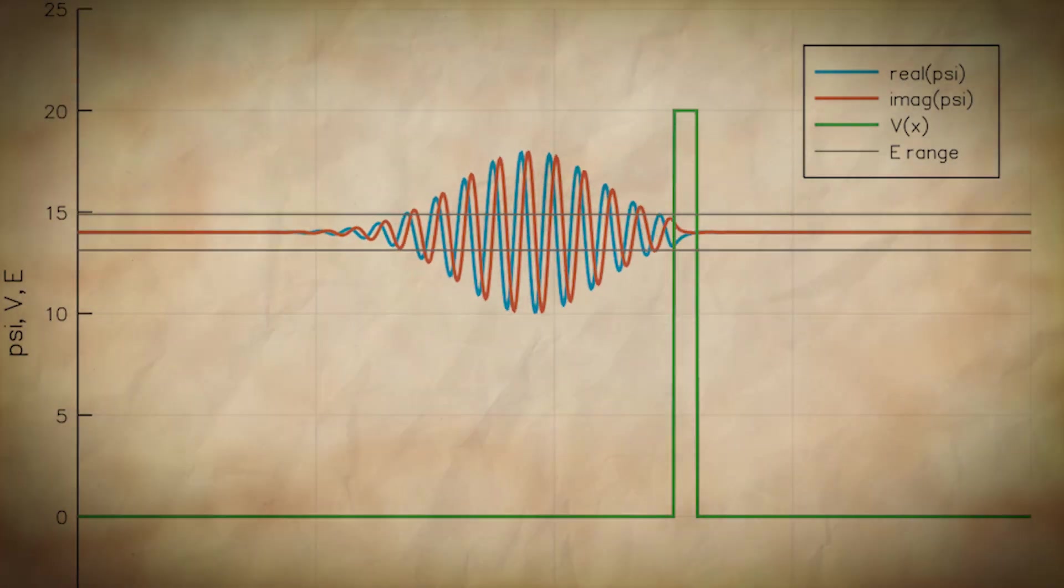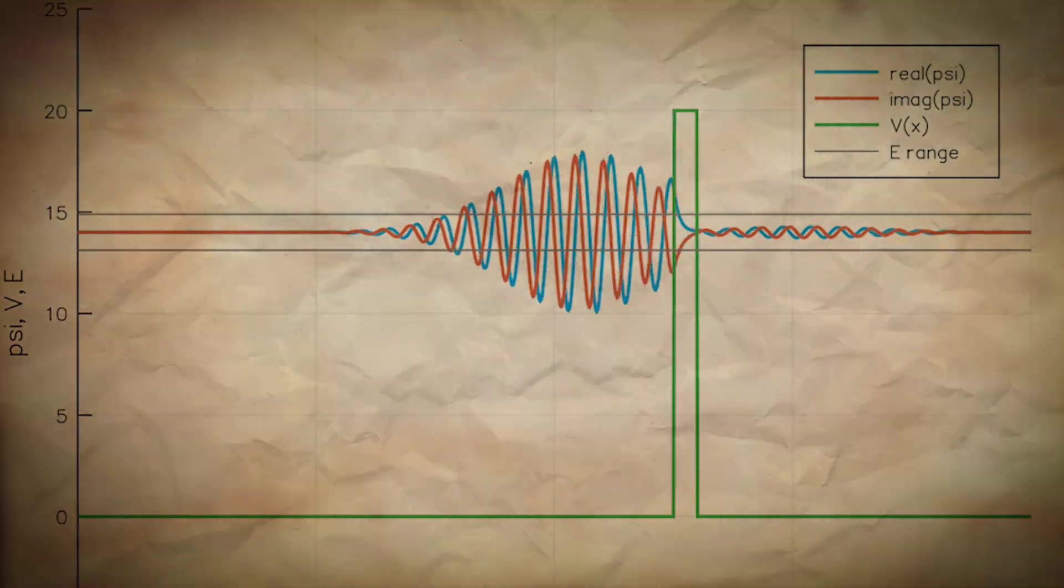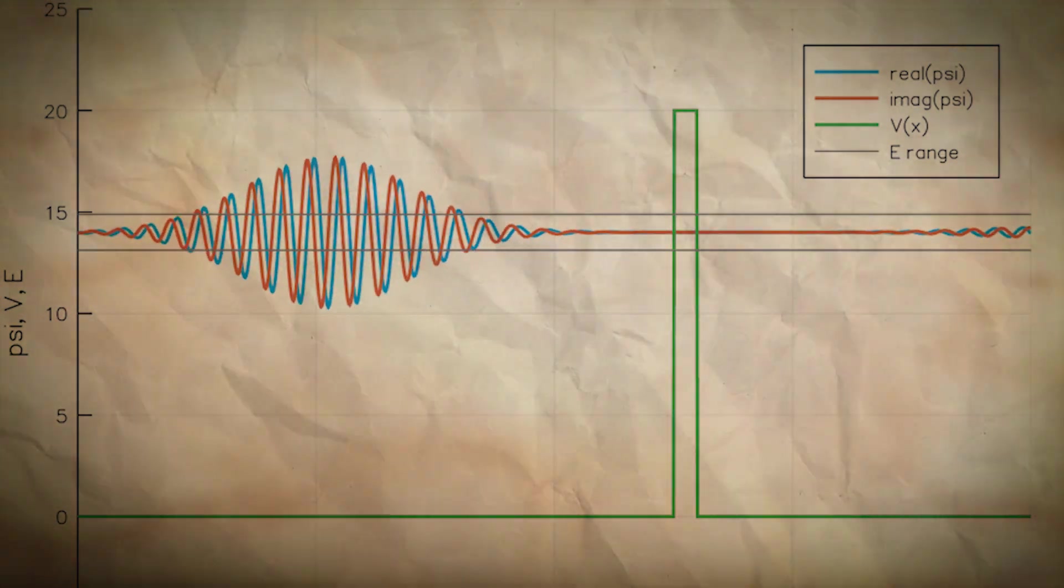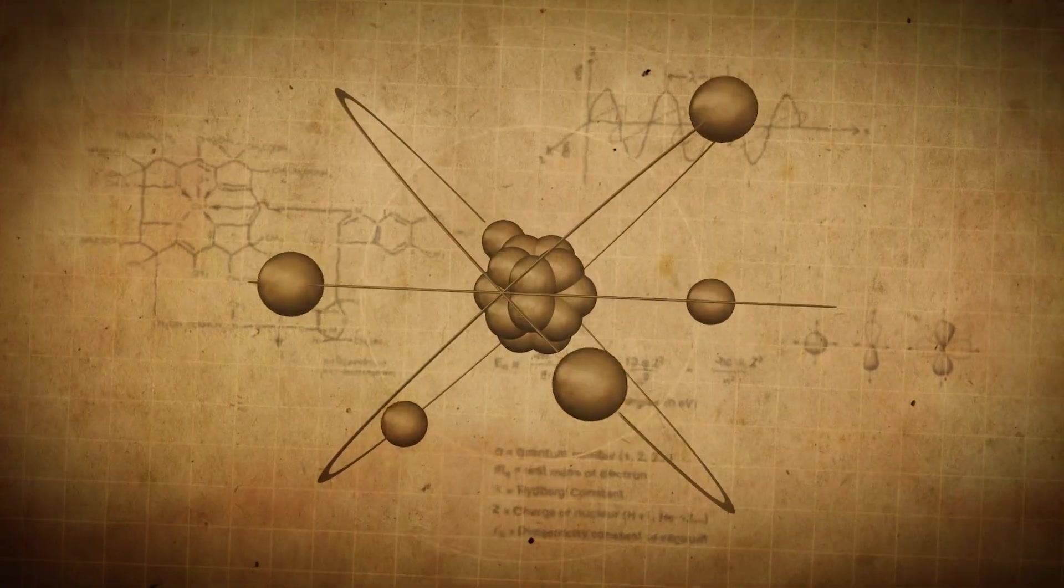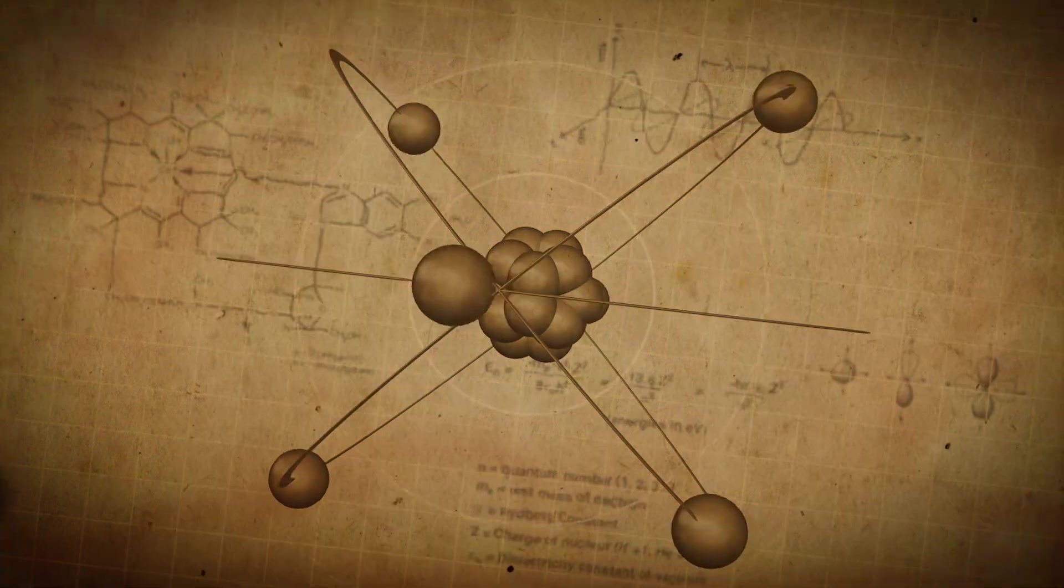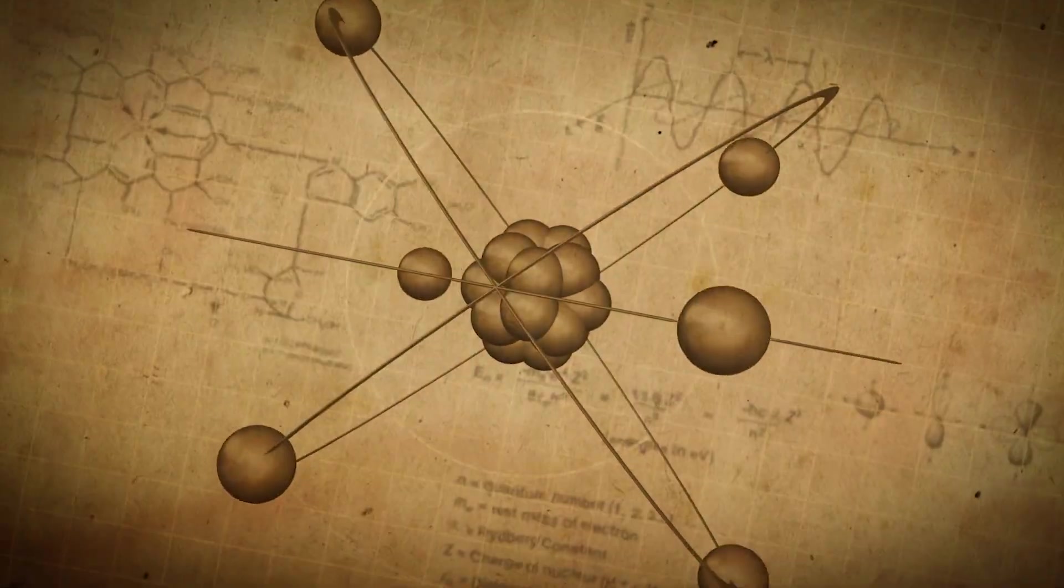Even if a particle doesn't seemingly have enough energy to overcome a barrier, there's still a small probability that it'll just tunnel through anyway. This phenomenon is pretty important in various fields like electronics and nuclear physics. For example, it's the reason why electrons can escape from atoms in a process called electron emission. But why is quantum tunneling such a mysterious thing, you ask?